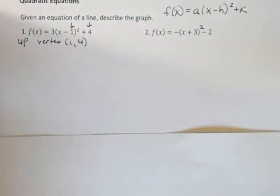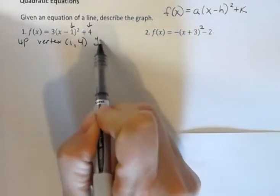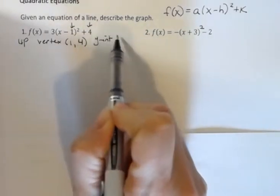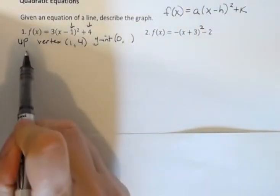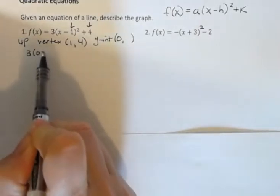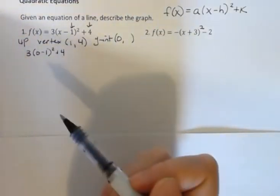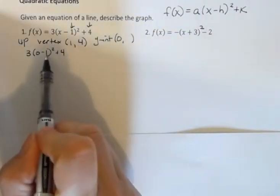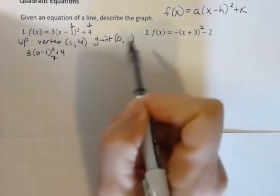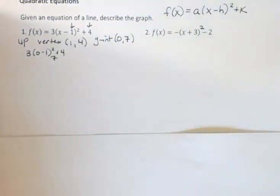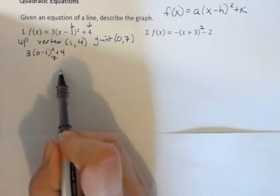And the last thing I would do if I really wanted to give a rough sketch of this is figure out what the y-intercept would be. Remember the y-intercept is what we get if we make x zero. What if you made x zero here? You would just plug a 0 in to where the x was and then you would solve. And negative 1 squared is 1 times 3 is 3 plus 4 is 7. So that tells me that my y-intercept would be 7.